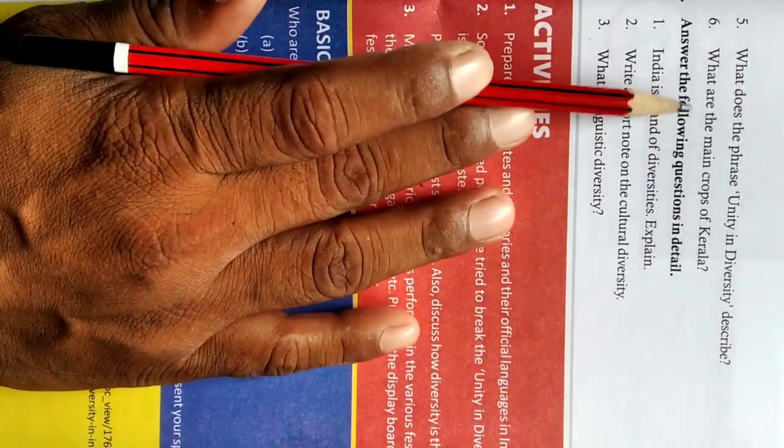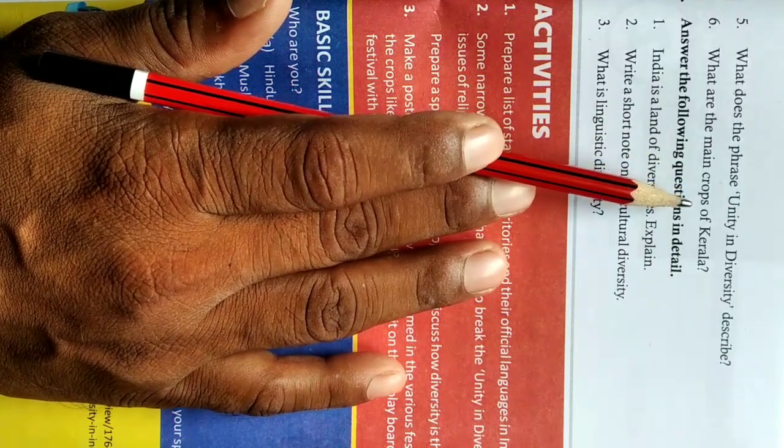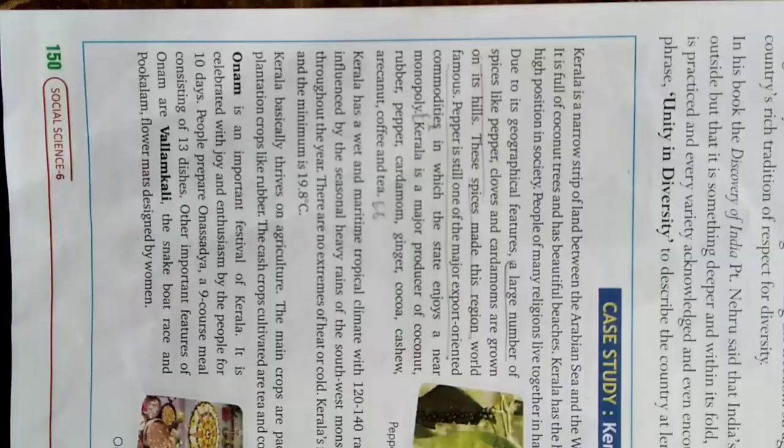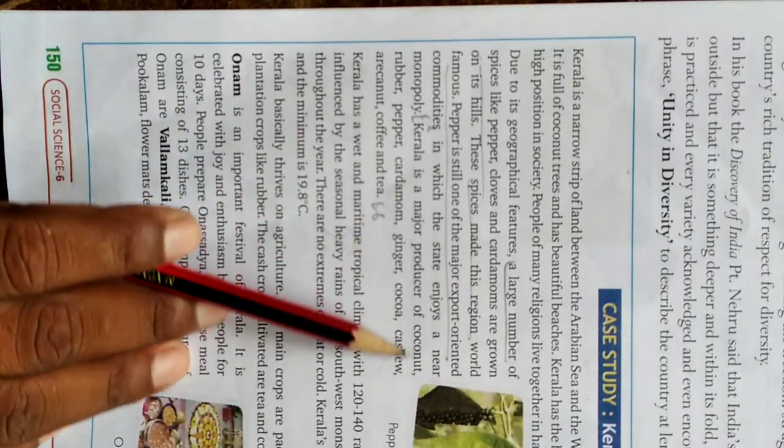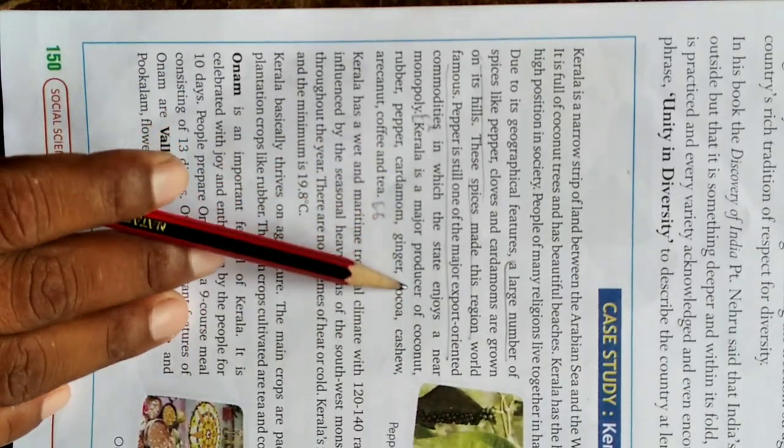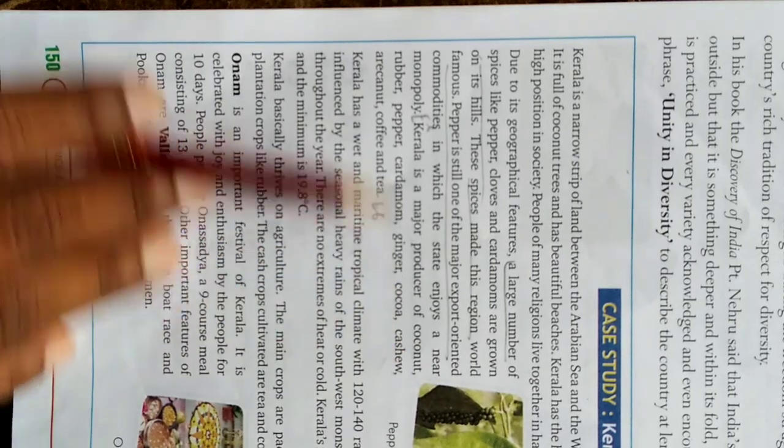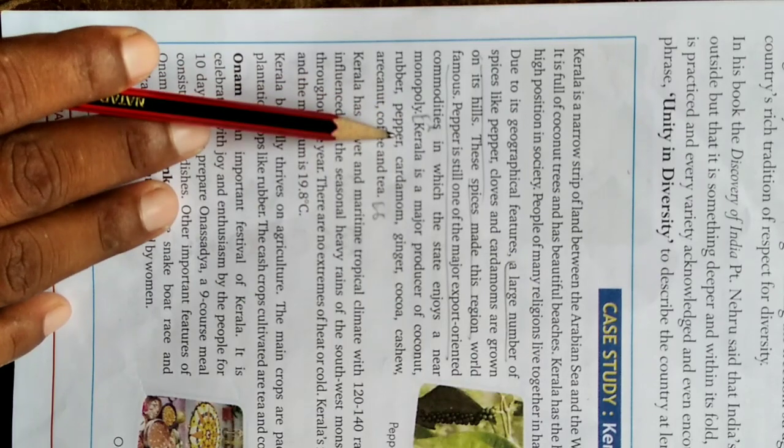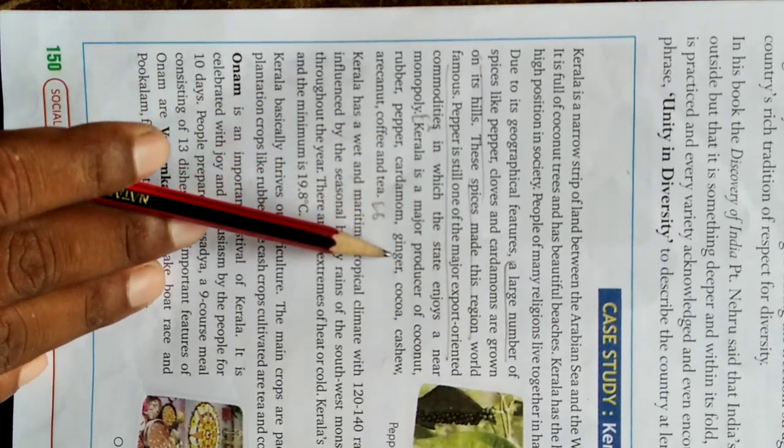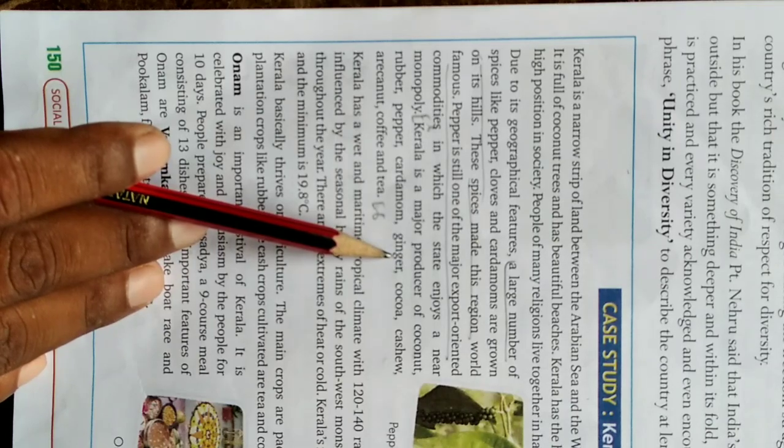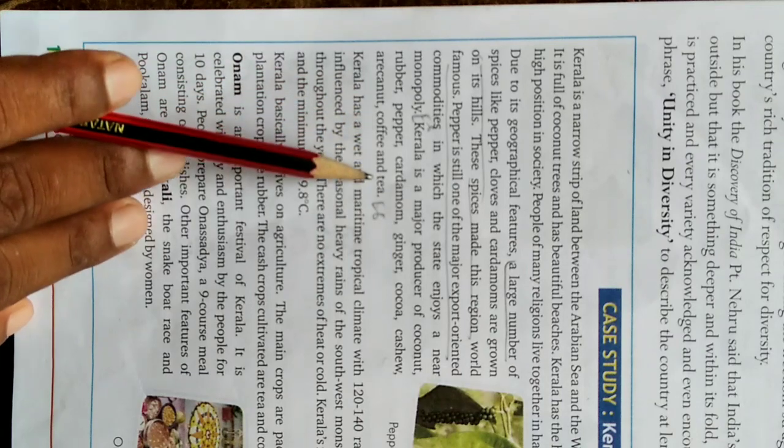What are the main crops of Kerala? Kerala is the major producer of coconut, rubber, pepper, cocoa, cashew, arecanut, coffee and tea.